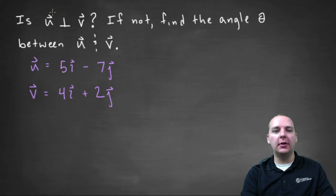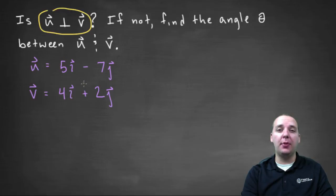So we can tell if a vector is orthogonal to another vector by taking its dot product and seeing if we get zero. Now if it's not zero, we still have some work to do. So let's do that first.